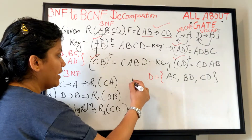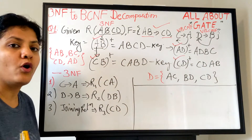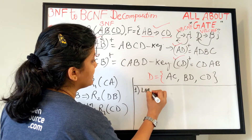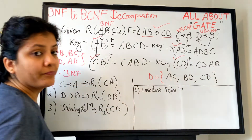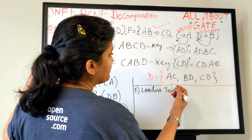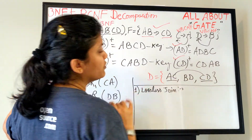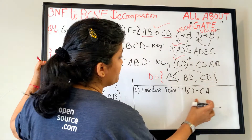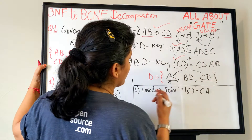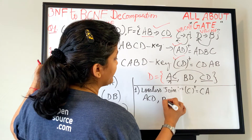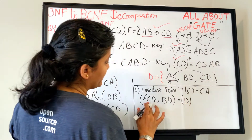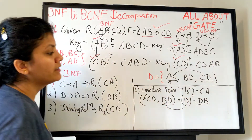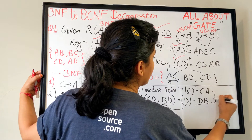All relations are binary, so they are in BCNF. Now let's check the lossless join property. Taking R1(AC) and R3(CD): the common attribute is C. C+ gives C and A, which is the superkey for R1(AC), so we can merge them to get ACD. Then checking ACD with R2(BD): the common attribute is D. D+ gives D and B, which is the superkey for R2(BD). So yes, it is a lossless join.